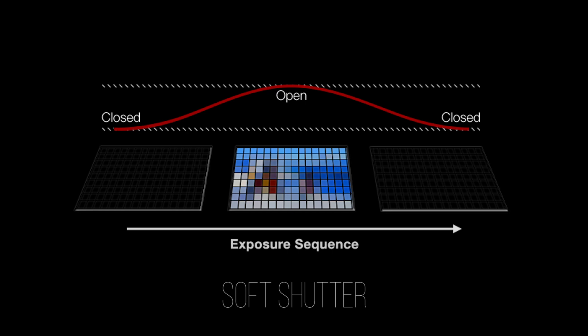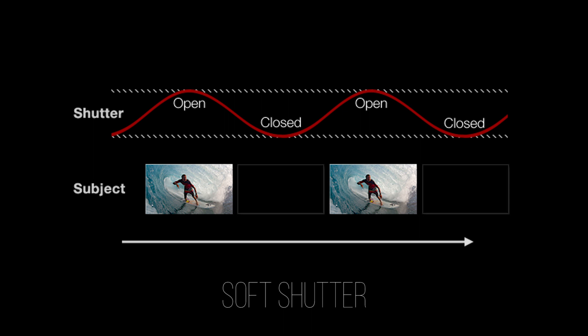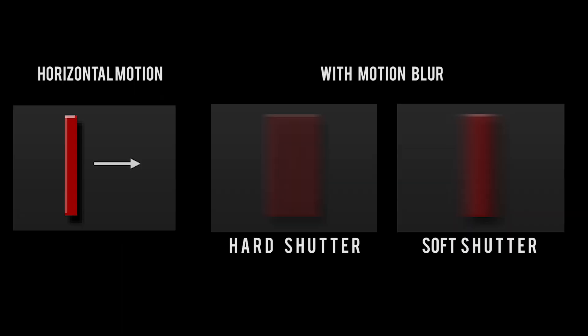A soft global shutter causes the middle of an exposure to contribute more than the start and the end. This causes the blur to fade gradually near a subject's edge, making it look smoother and more natural with camera movement. A hard shutter will allow strobes to appear uniform and unbroken, unlike with a rolling shutter.